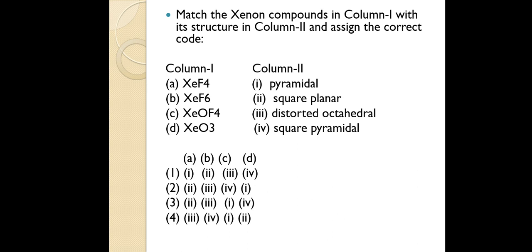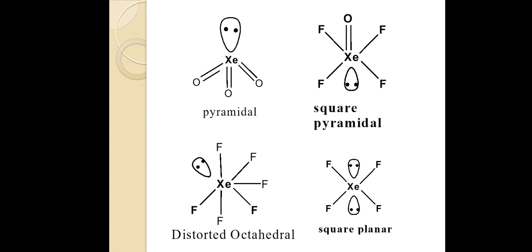The next question is about molecular structure using VSEPR theory — again a very common topic in entrance examinations. Four xenon compounds are given and we need to identify their correct structures. Drawing them out: XeO₃ is pyramidal, XeOF₄ is square pyramidal, XeF₆ is distorted octahedral, and XeF₄ is square planar. You must have a clear understanding of VSEPR theory to solve such questions.